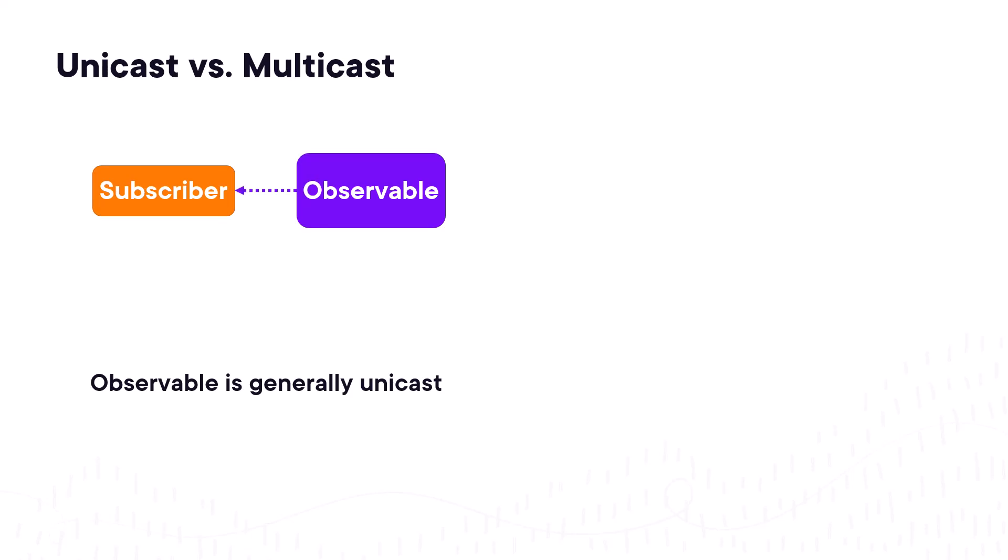A basic observable is generally unicast, meaning it emits to a single subscriber. So when there are multiple subscribers, each subscriber gets a new observable.